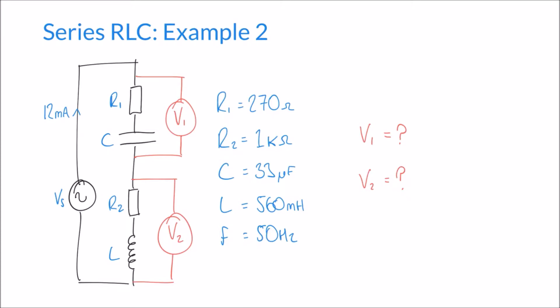Welcome to this second video on series RLC circuits — this is our second example. If you haven't watched our first video on series RLC, I recommend going back to check that out first because this example is a little more complicated. Here we have one additional component: rather than just one resistor, one capacitor, and one inductor, we have a resistor and a capacitor followed by another resistor and an inductor.